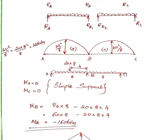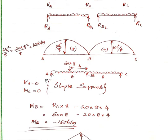For the bending moment diagram, at support A and support C the moment is zero, as these are simple (hinged) supports. The moment at the interior support B needs to be calculated. Taking the left side of the beam, we use the reactions and load to compute the moment at B.